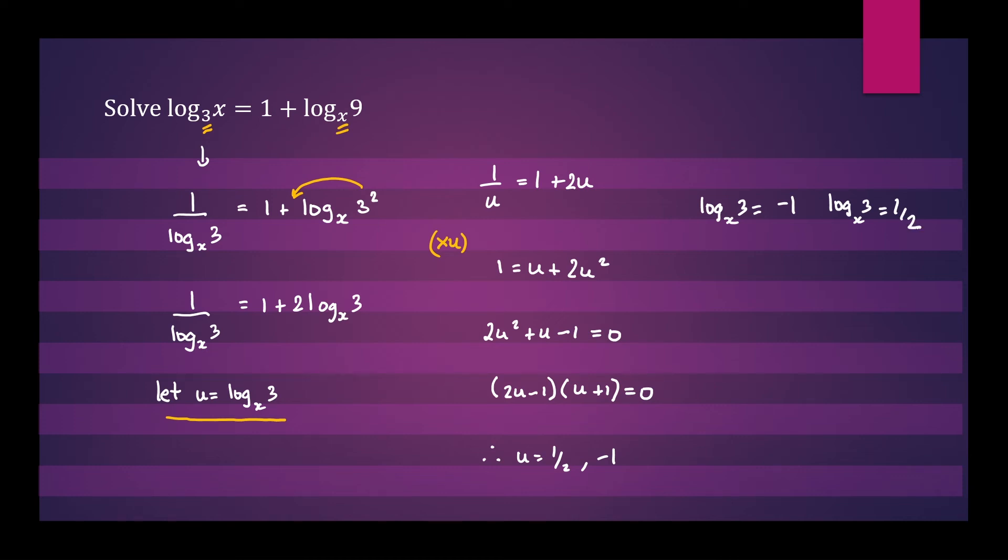When we change to the exponential form, we'll have 3 equals x to the power negative 1. We can write that as 3 equals 1 on x. Therefore, by rearrangement, x will equal 1 third.